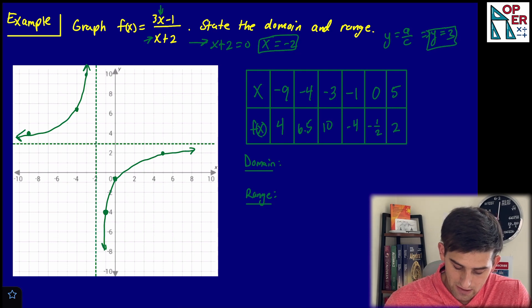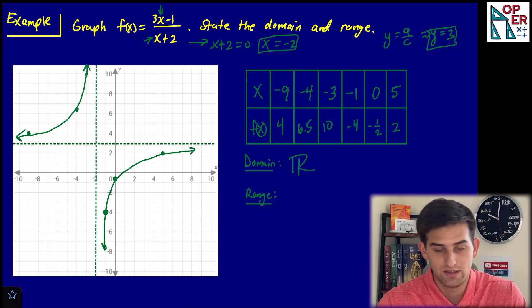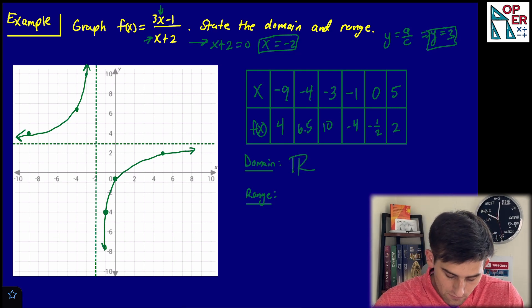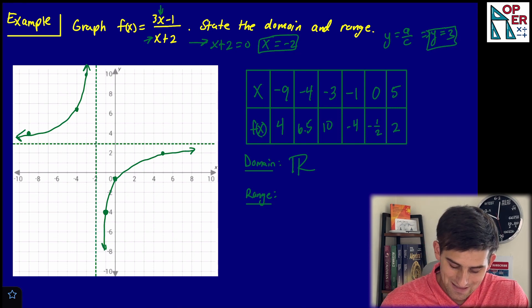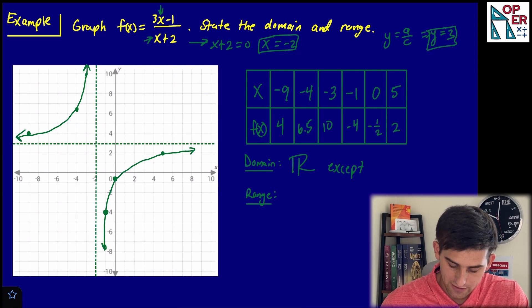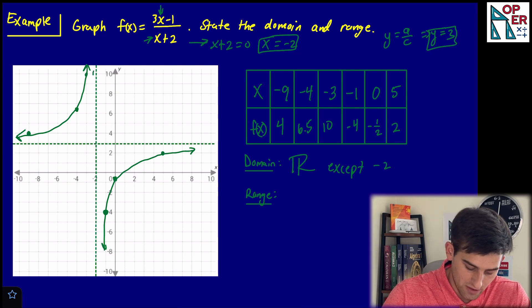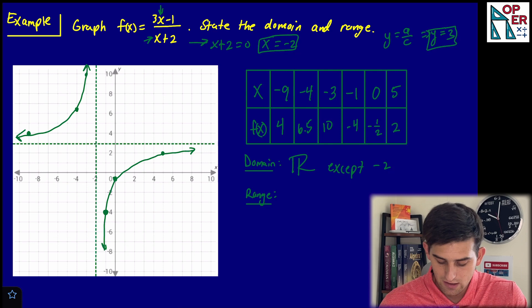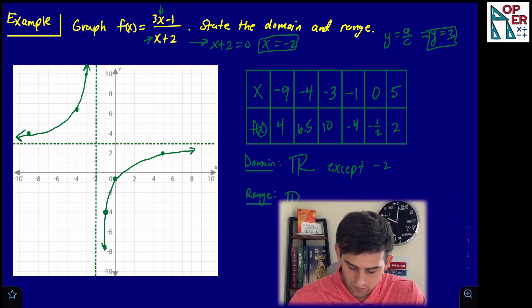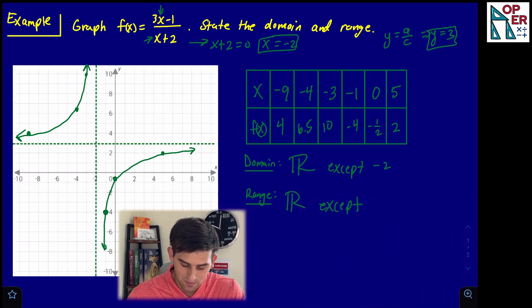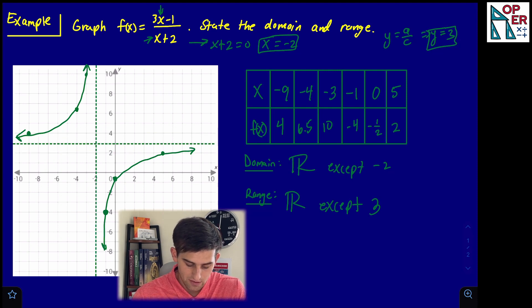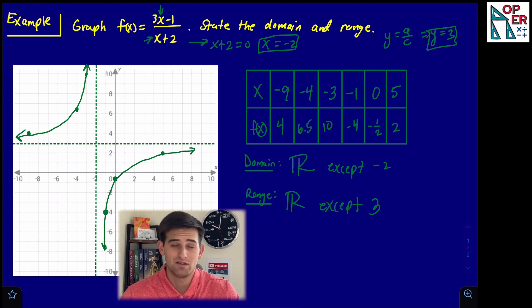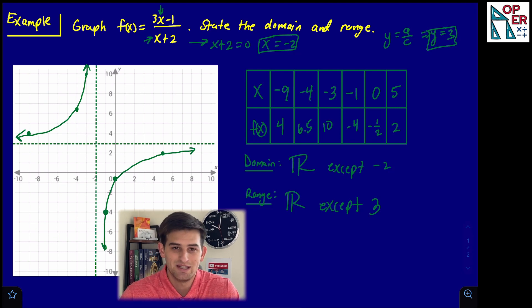Now we can state our domain and range. For the domain: all real numbers except negative two, because that's our vertical asymptote. For the range: all real numbers except three, because that's our horizontal asymptote. And that's how you graph the rational function y equals ax plus b over cx plus d.